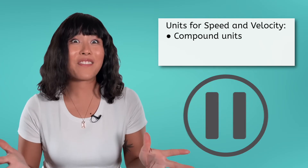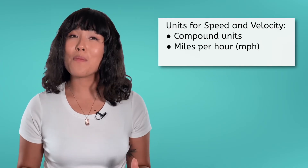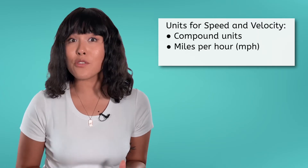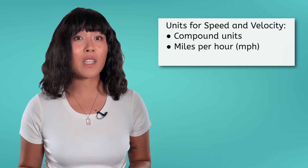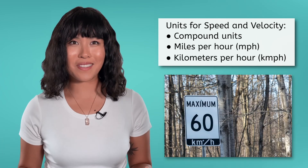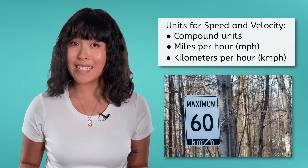Did you think of at least one? Miles per hour, or MPH, is a common unit for speed used in the US. What about countries that use the metric system? What unit would likely be substituted for miles? Kilometers! So kilometers per hour is one possible metric unit for speed and velocity. You might be surprised to learn, however, that kilometers per hour is not the standard metric unit for speed and velocity.